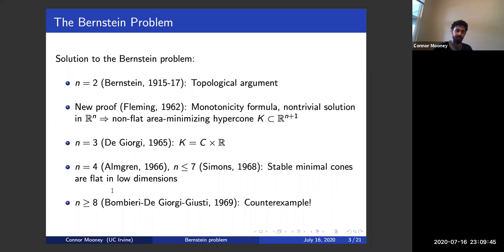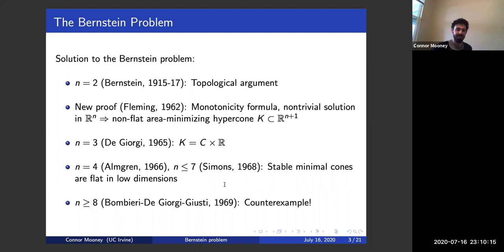Finally, in 1969 Bombieri, de Giorgi, and Giusti constructed non-linear global solutions to the minimal surface equation — in dimension eight with cubic growth — showing that the result of Simons is sharp and completely resolving the problem. I'll say a little more about this example later, but I'd like to relate a short story: I read recently that Bombieri, de Giorgi, and Giusti solved this problem in three days. Apparently they got together and worked on it nonstop for three days straight until they cracked it. There was a real sense of urgency. It's kind of an amazing story.